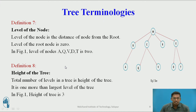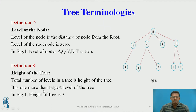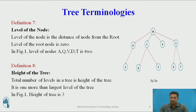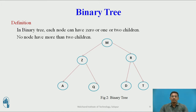The height of the tree is the total number of levels in a tree, and it is generally one more than the largest level of the tree. Height is considered for a complete tree, not for a particular node. So the height of this tree is 3, because the maximum level is 2, and 2 plus 1 equals the height of that tree.